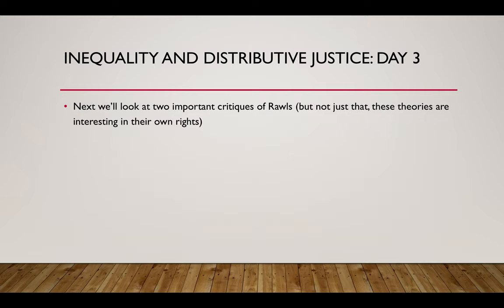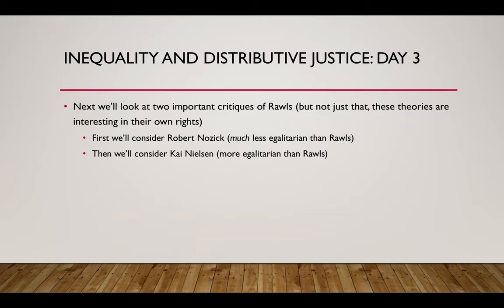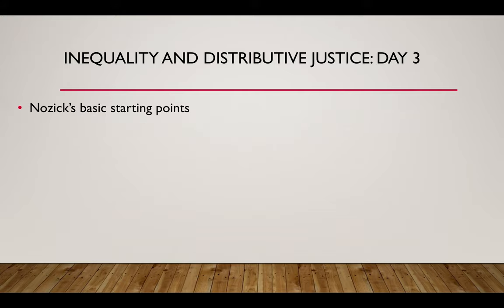Now we're going to look at two important critiques of Rawls — and they're interesting in their own right, not just as critiques. The first is Robert Nozick's critiques of Rawls and his theory. Nozick, as we'll see, is much less egalitarian than Rawls. Next time we're going to look at Kai Nielsen's principles of distributive justice, and Nielsen is actually more egalitarian than Rawls. So let's get to work on Nozick.